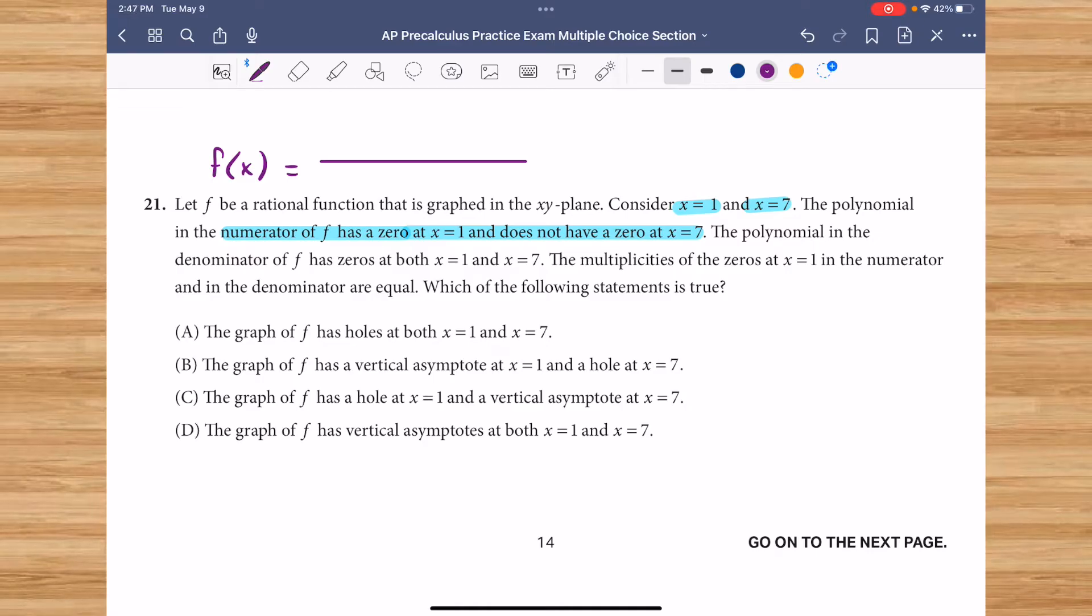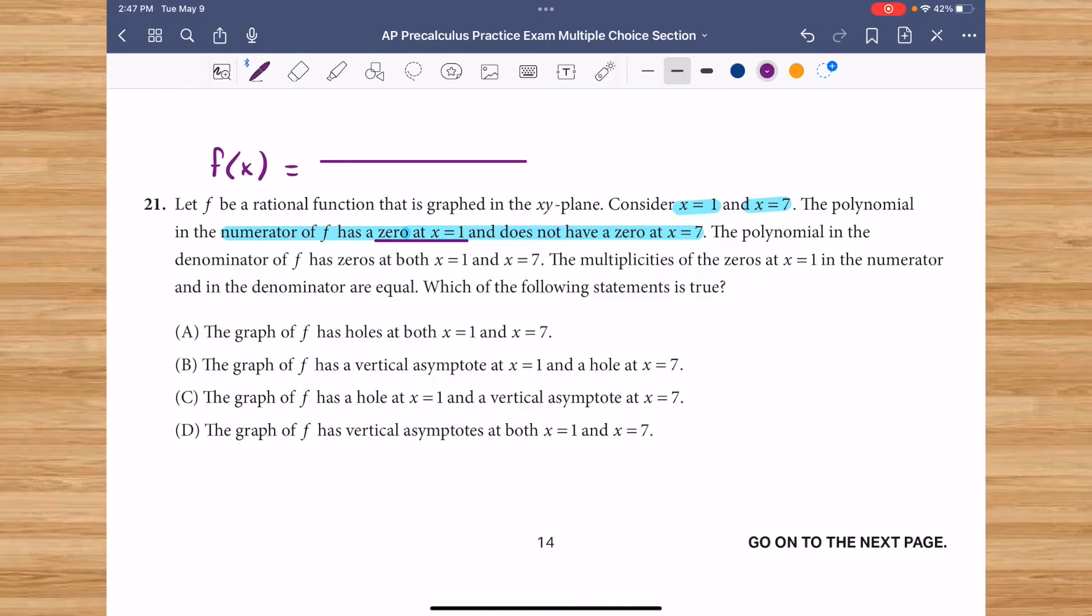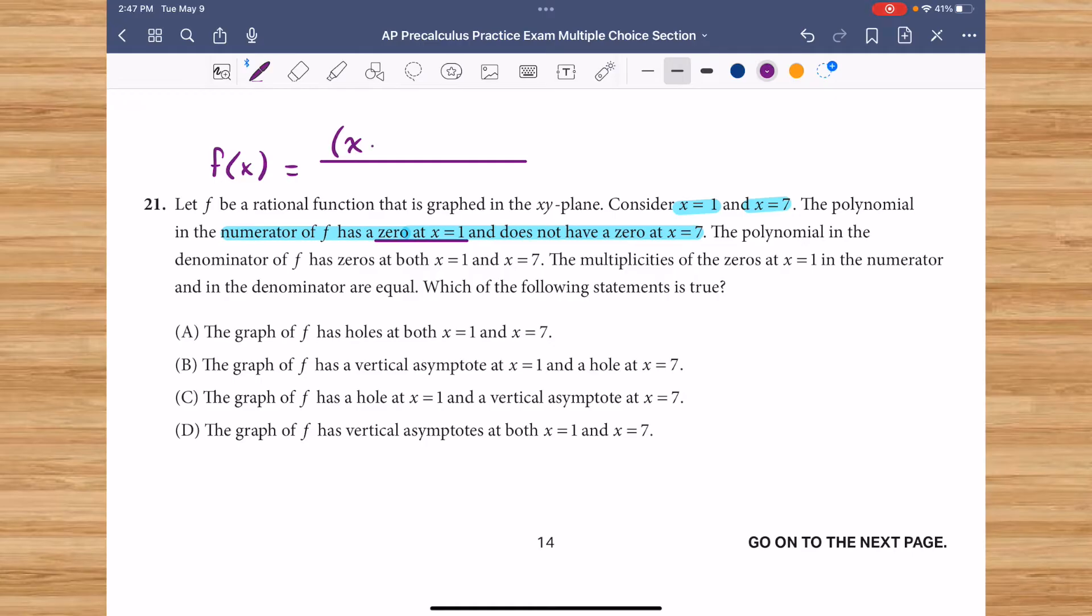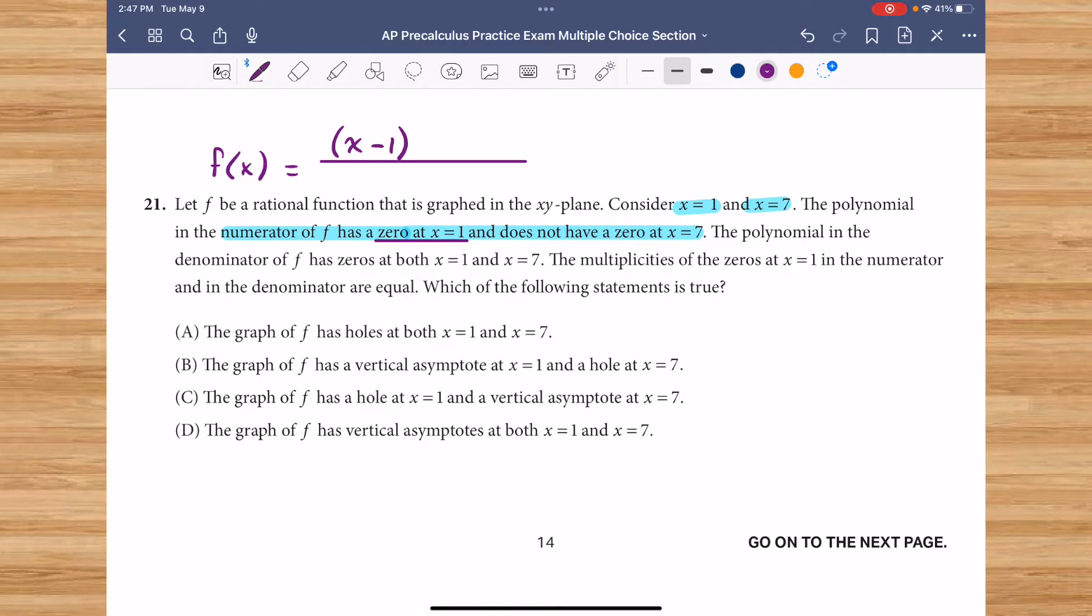The polynomial in the numerator has a 0 at x equals 1. This means that a factor that exists in the numerator must be x minus 1 in order to have a 0 at x equals 1.